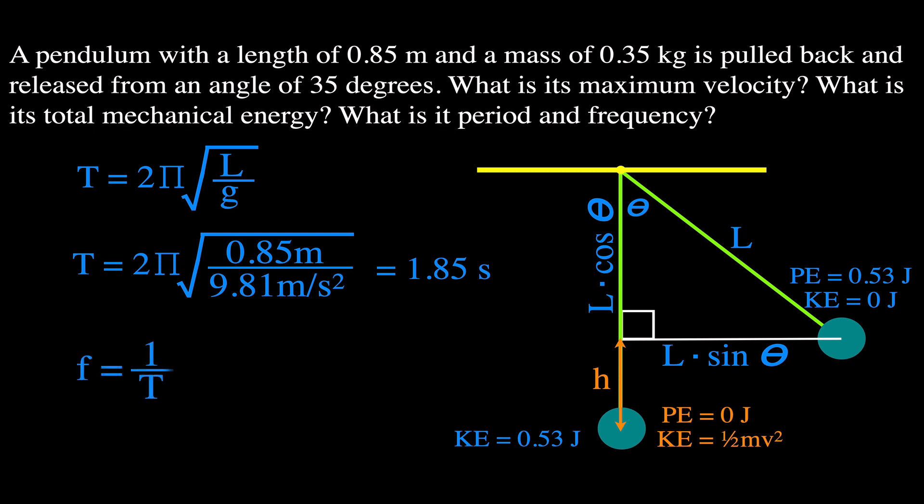For the frequency, since frequency and period are inversely proportional, the frequency is 1 over the period: 1 divided by 1.85 seconds gives a frequency of 0.54 hertz. So there we have all three results: maximum velocity of 1.74 m/s, total mechanical energy of 0.53 joules (converting between kinetic and potential), and a period of 1.85 seconds and frequency of 0.54 hertz for that pendulum of that mass and length, released from 35 degrees.